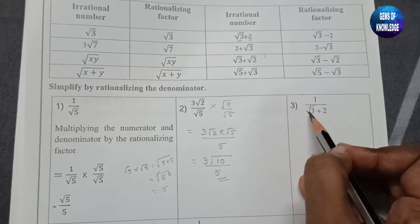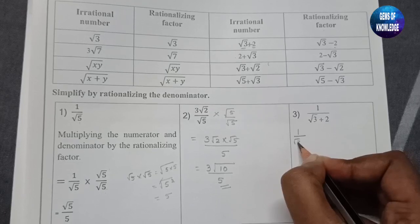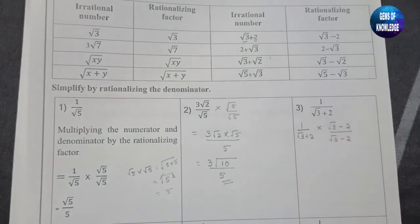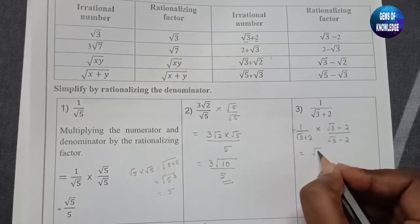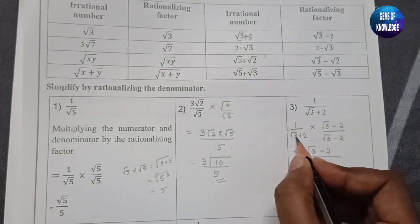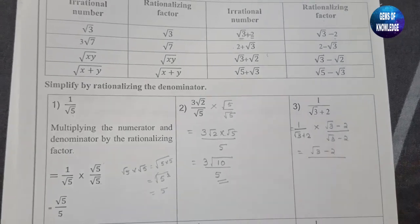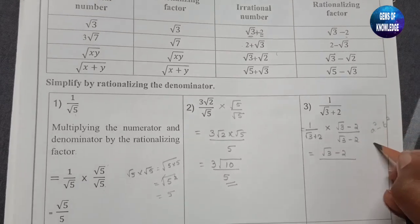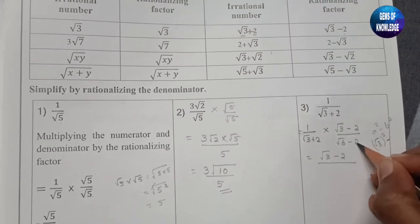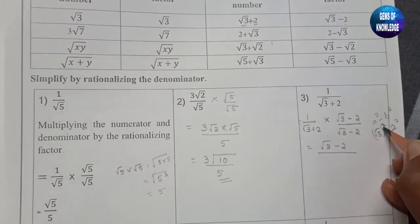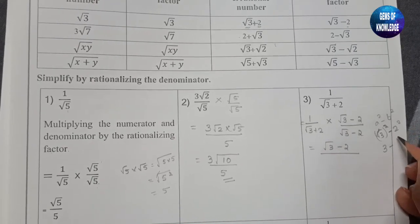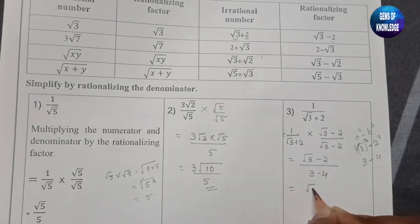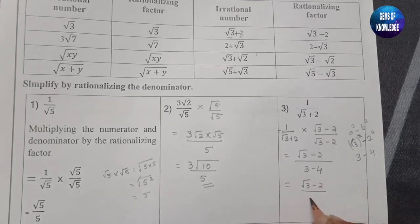Next, 1 divided by (√3 + 2) is given — this is a binomial term. We multiply by (√3 − 2)/(√3 − 2). The numerator becomes √3 − 2. The denominator uses the (a+b)(a−b) = a²−b² formula: √3 squared is 3, minus 2 squared which is 4. So 3 − 4 = −1. The answer is (√3 − 2)/(−1).